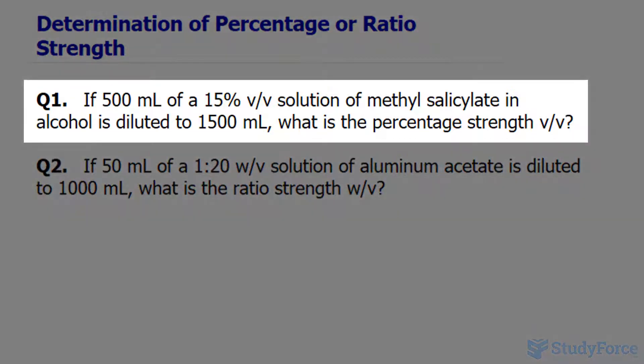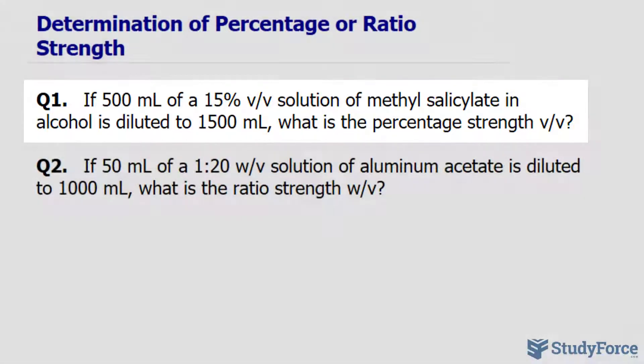If 500 milliliters of a 15% volume per volume solution of methyl salicylate in alcohol is diluted to 1500 milliliters, what is the percentage strength volume per volume? So we're told in that very first part that the solution is made up of 15% volume per volume of methyl salicylate in alcohol.